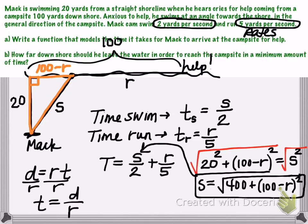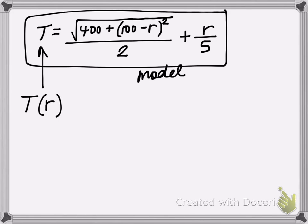Now part B asks for how far down the shore he needs to leave the water in order to reach the campsite in a minimum amount of time. This is the optimization part of the problem. We need to calculate the minimum amount of time. At this level of math, I don't expect you to do this algebraically. I would want you to go ahead and use technology. So let's use our graphing calculators and graph this function and then calculate the minimum.